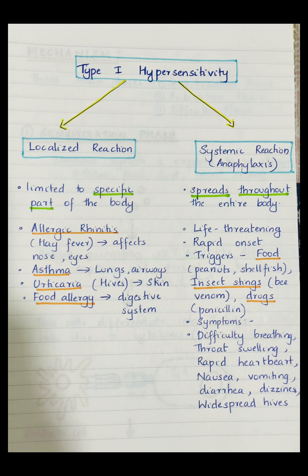Systemic reaction, or anaphylaxis, is the most severe reaction and can be life threatening. This reaction occurs when the allergic response spreads throughout the entire body, affecting multiple organ systems. It has a rapid onset, occurring within minutes to an hour after exposure to the allergen. It is triggered by foods such as peanuts, shellfish, insect stings such as bee venom, or drugs like penicillin. Symptoms include difficulty in breathing, throat swelling, rapid heartbeat, nausea, vomiting, diarrhea, dizziness, or widespread hives. The systemic reaction affects multiple organs like skin, heart, lungs, and the gastrointestinal tract, and can cause shock or death if not treated immediately.